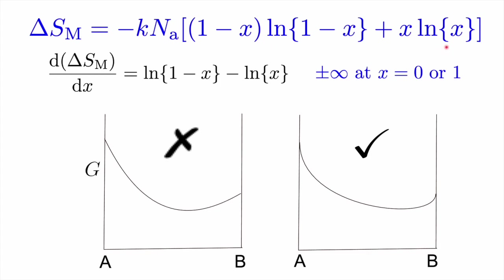Going back to our equation for the entropy of mixing — if I differentiate this equation with respect to concentration, I get ln(1−x) + ln(x), which at x equals 0 or 1 has slopes of plus or minus infinity. So drawing a free energy curve with finite slopes at the endpoints is wrong — the slope should be infinite there. This is the correct way of drawing free energy curves as a function of concentration. Furthermore, this kind of curve illustrates that there is a very sharp slope even though the intercept is finite, meaning it's very difficult to purify materials because you would have to put in a lot of work to get rid of the last bits of impurities.